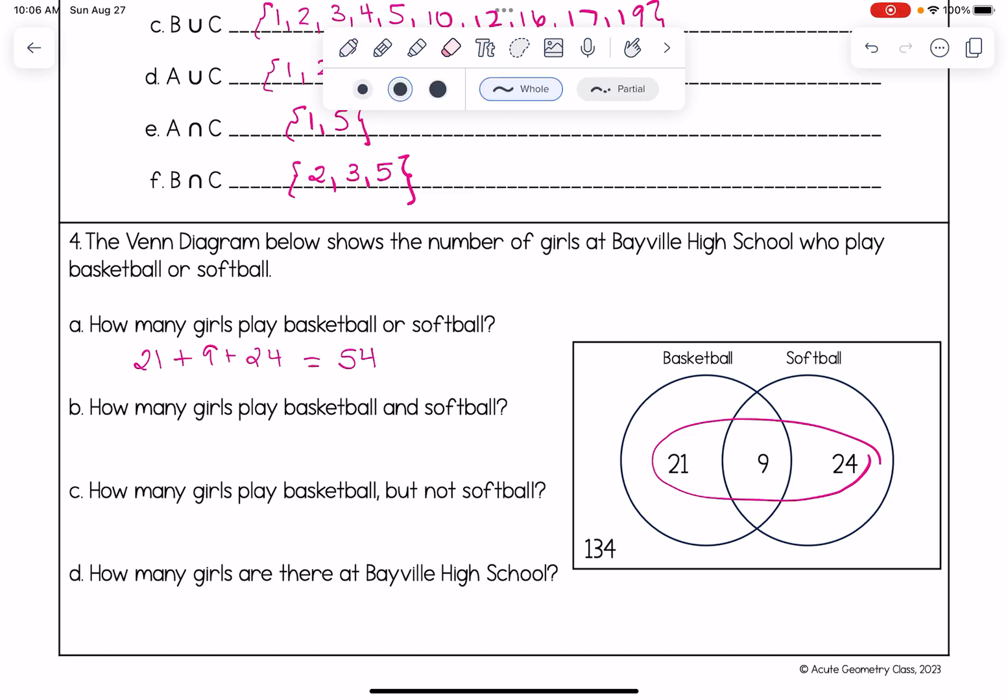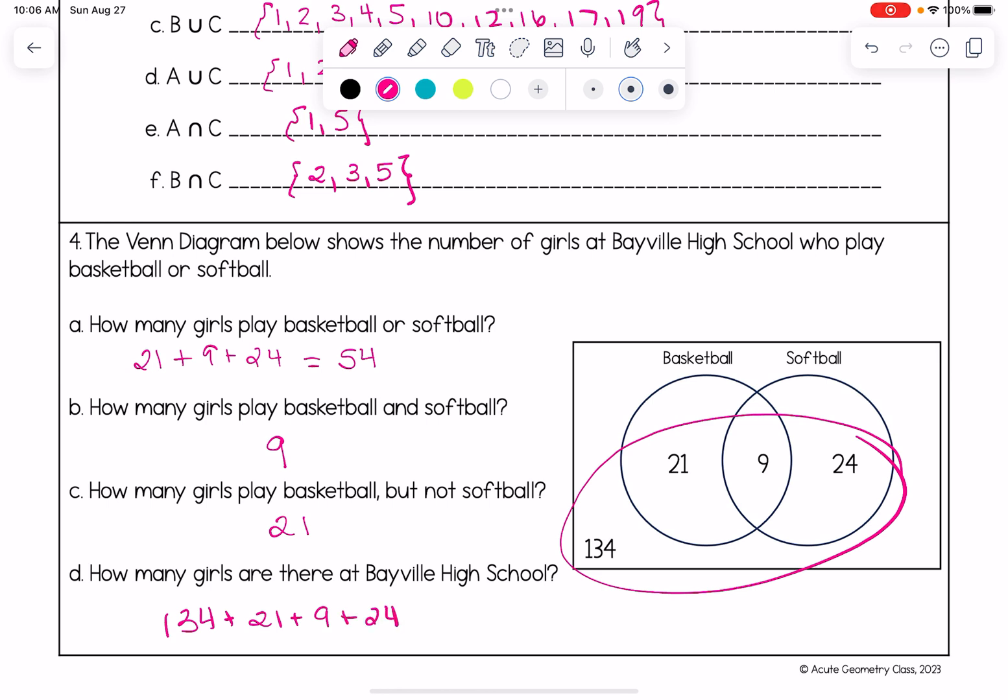Now it says how many girls play both basketball and softball. That's the intersection. That's this piece in the middle. That's nine. How many girls play basketball but not softball? That's this missing piece over here. That's this 21 because they're in the basketball part of the Venn diagram but not the softball part. And lastly it asks how many girls are there at Bayville High School? That's looking for the universal set. How many people we're looking at? That's the sum of everything. So that's 134 plus 21 plus 9 plus 24 and that's going to give us a total of 188.